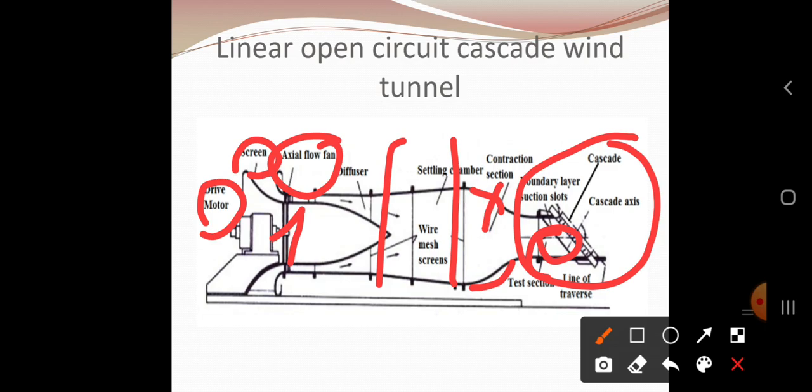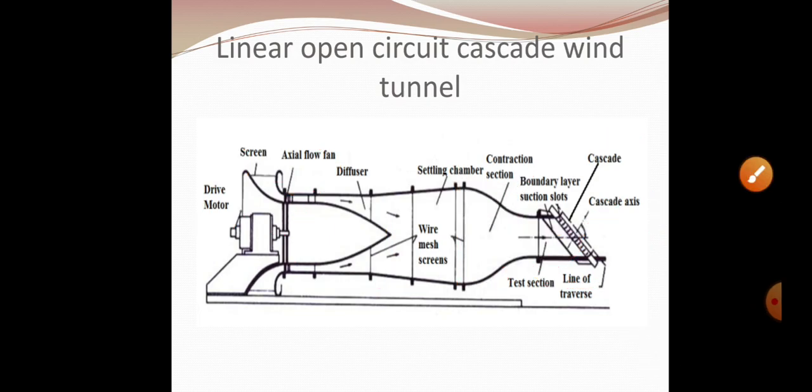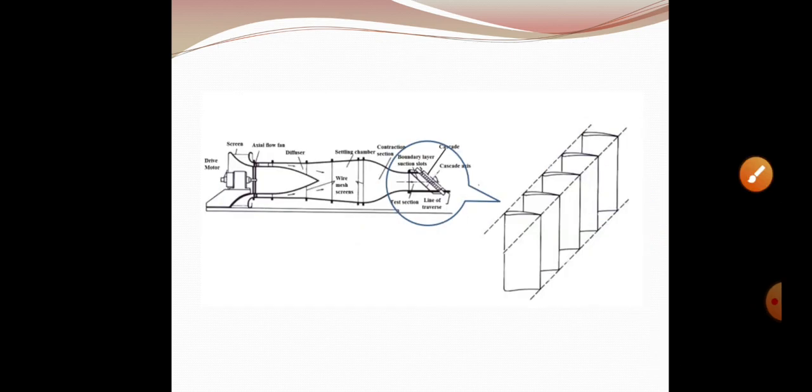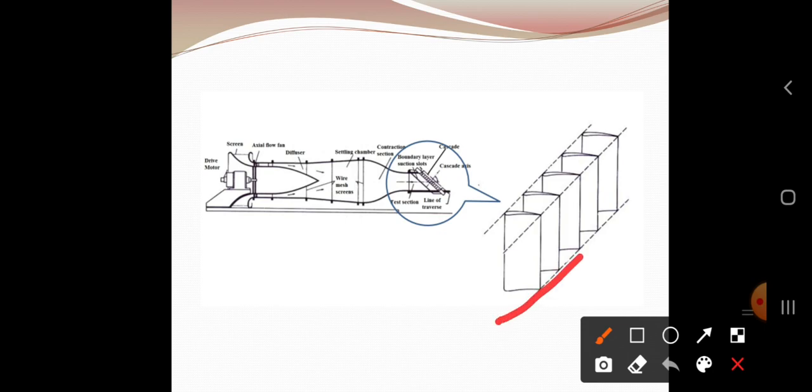This cascade will be having a cascade axis which can be adjusted so that we can study at different angles. So here we can see the complete cascade. This cascade is nothing but an arrangement of series of blades.